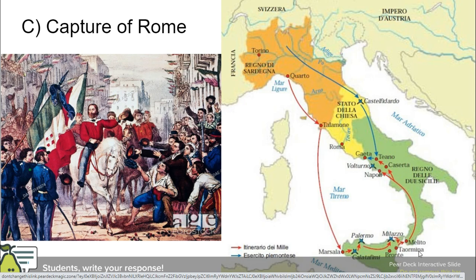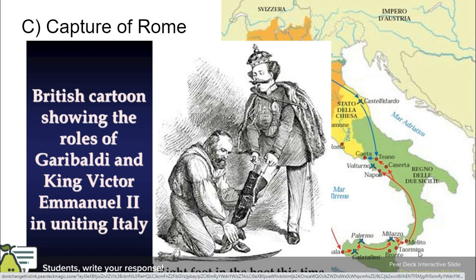Cavour and Garibaldi then decided to unite together, because although they had their massive political differences — much like Iturbide and Vicente Guerrero before them — they shared a vision of a united Italy free from foreign powers. They launched an assault on territory they had not previously controlled, namely the city of Rome. They were able to capture it, and with the destruction of the papal states and the blessing of the Pope — who didn't really have a choice — they created the united country of Italy. Here we see Garibaldi helping King Victor Emmanuel II put his metaphorical foot in the boot, and now Italian people could unite their resources to make sure their interests are protected.